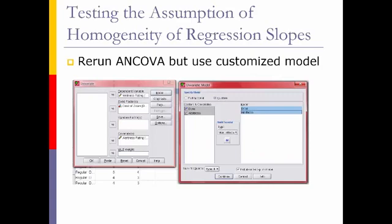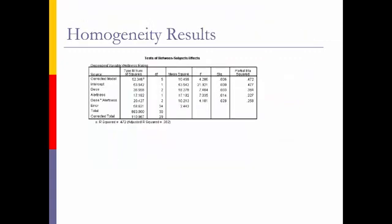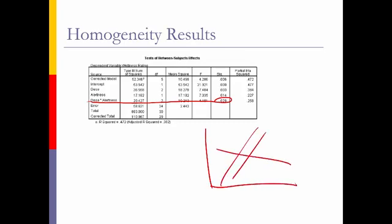To test the assumption of homogeneity of regression slopes, rerun the ANCOVA using a customized model - move dose and alertness over, then add their interaction. The dose-by-alertness interaction is significant, which means the assumption of homogeneity of regression slopes has been violated. But we already knew that from our scatter plot, which showed two parallel lines and one non-parallel line. Therefore we know we do not have homogeneity simply from the scatter plot - you don't have to run this test if you've already answered it visually.